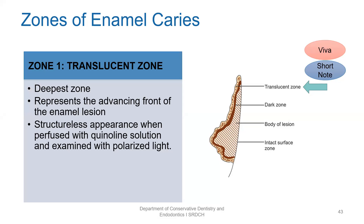The first zone is the deepest zone and is known as the translucent zone. It represents the advancing front of the enamel lesion. When it is perfused with quinolone solution, it gives a structureless appearance when examined under polarized light, and that is why it gives a translucent appearance.